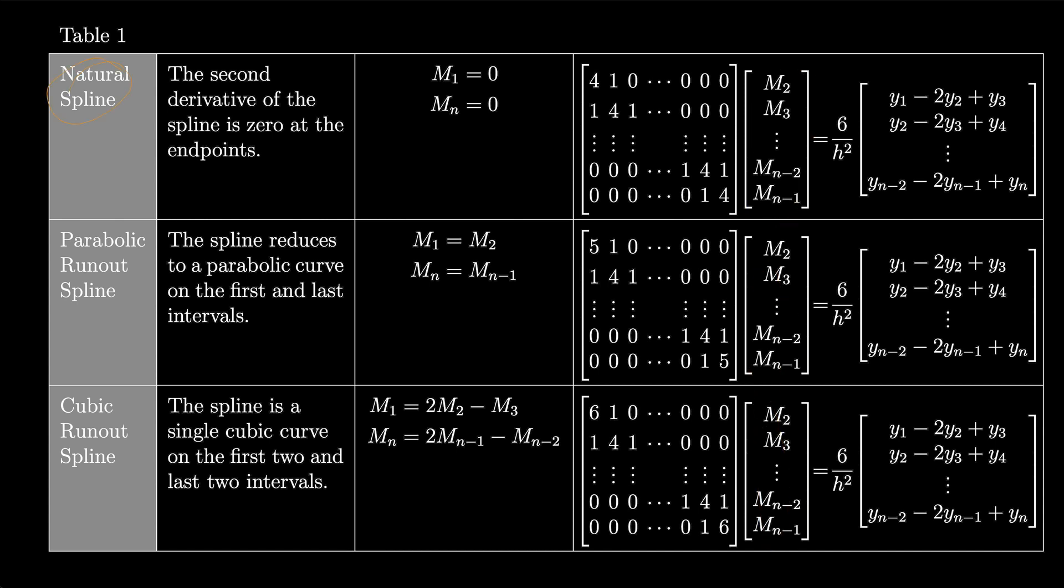So that was the natural spline. The other spline we could talk about is the parabolic runout spline. That spline reduces to a parabolic curve on the first and last intervals. So we set m1 equal to m2 and we set the last one mn equal to the previous one m(n-1).